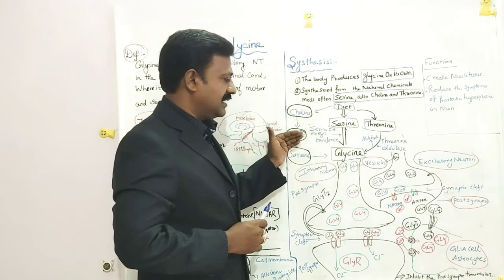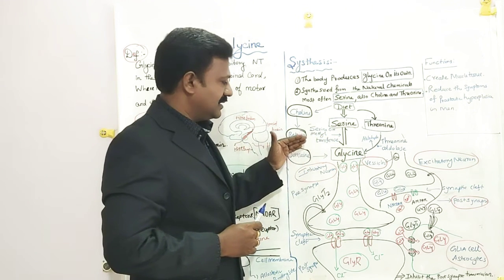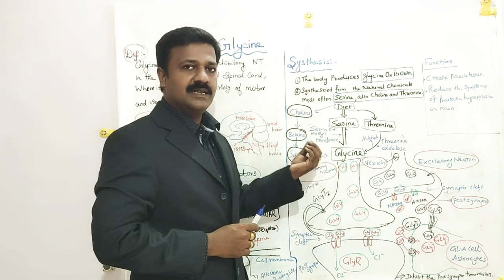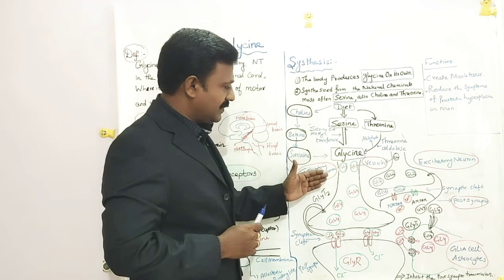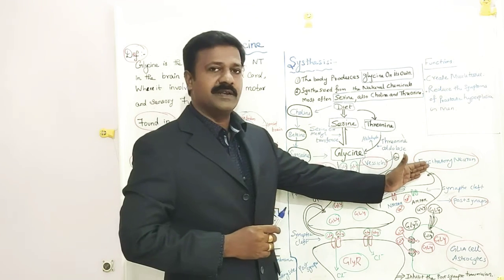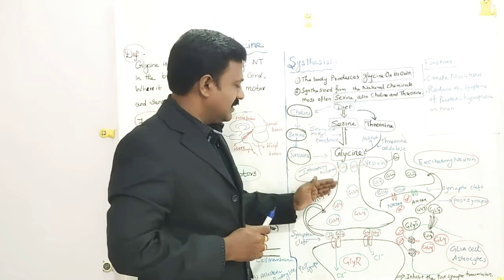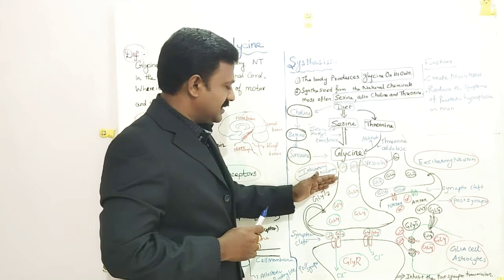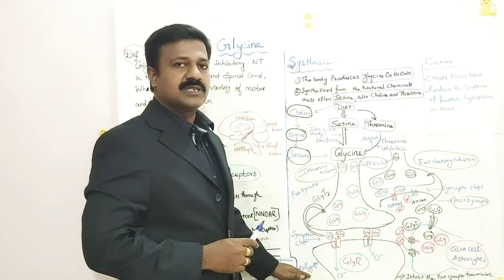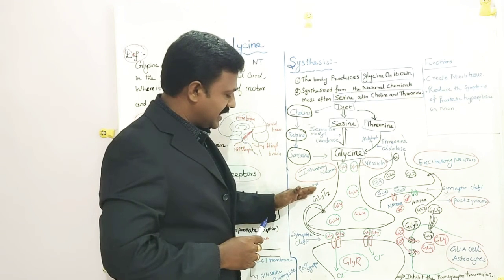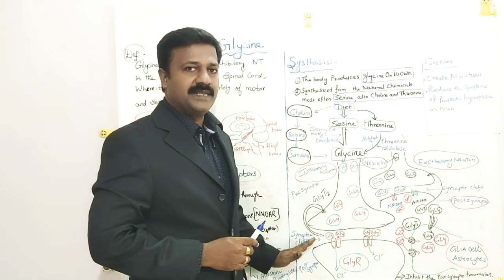Then let's see about how they transmit it, how their transmission takes place. Here I represent the inhibitory neuron and the excitatory neuron, and also the glial cells. In the inhibitory neuron, this is the presynapse, this area is called the postsynapse. In between the presynapse and postsynapse, this area is called the synaptic cleft.